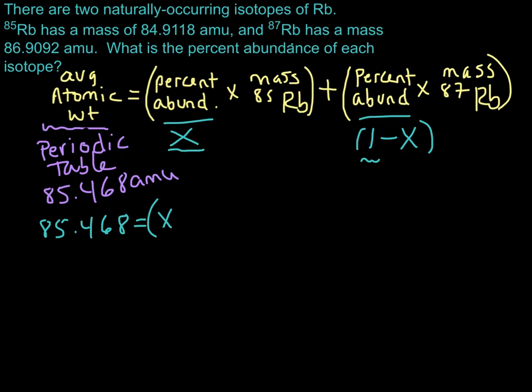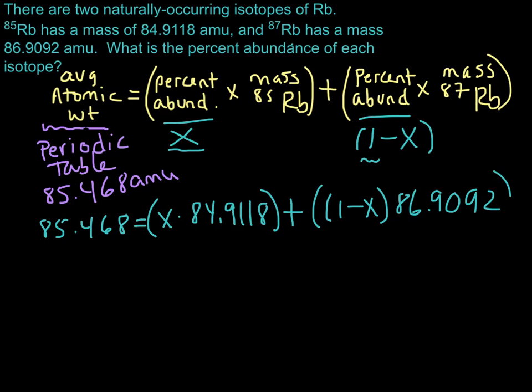And it's going to be x times, let's get our isotopic mass, which is 84.9118, and then we're going to add on to that 1 minus x. So that's going to be 1 minus x times 86.9092 amu. So now we have our equation set up. Now all we have to do is solve for x.